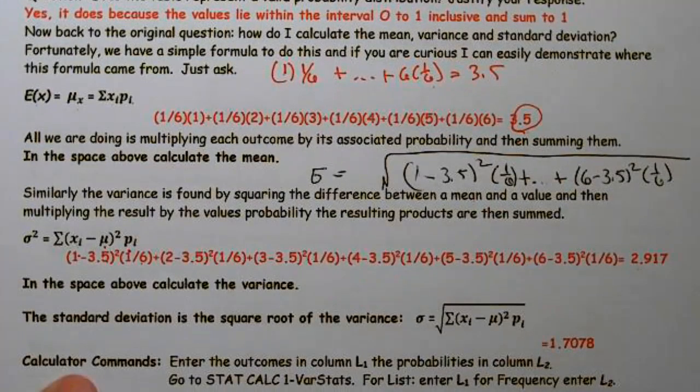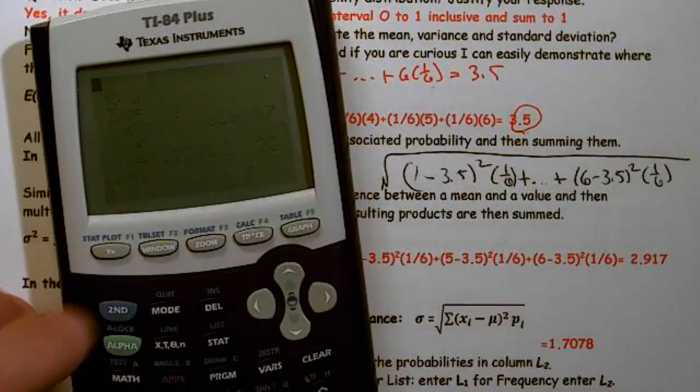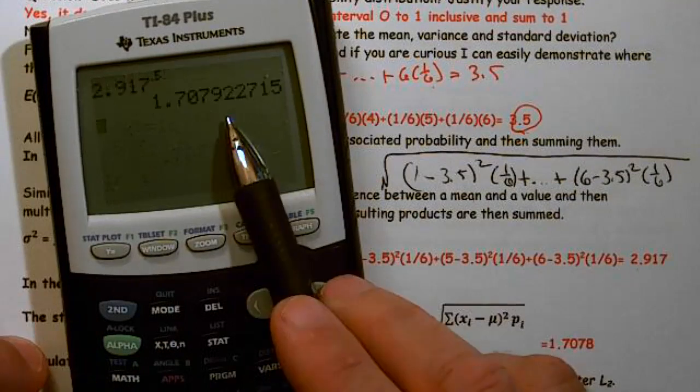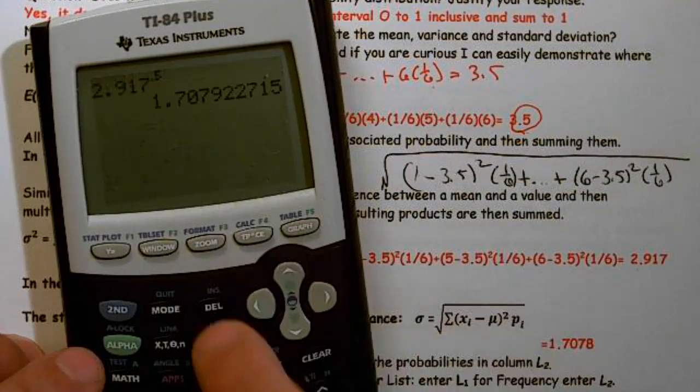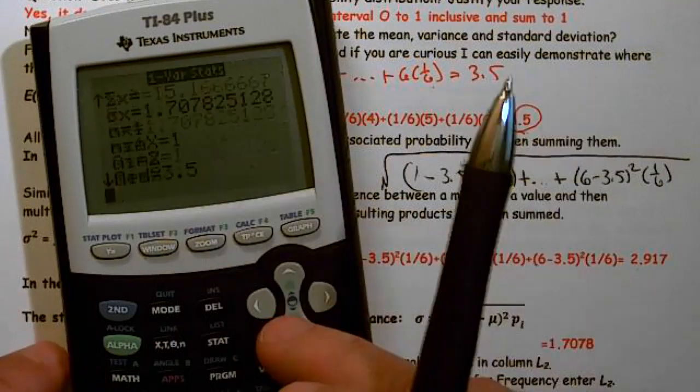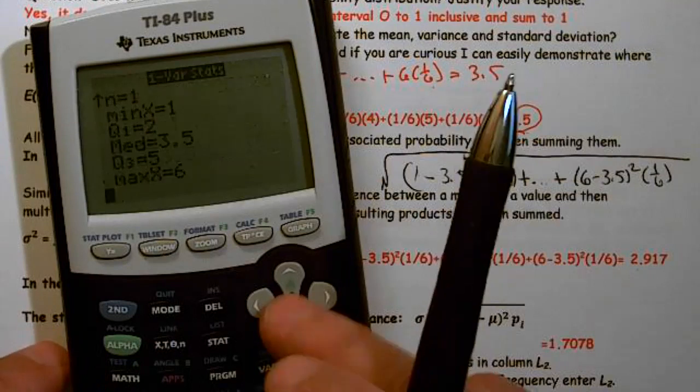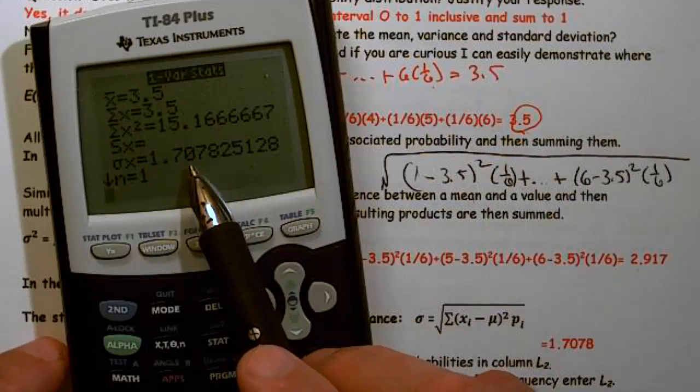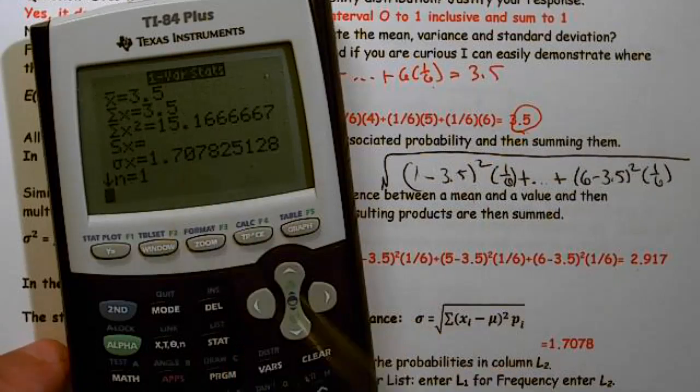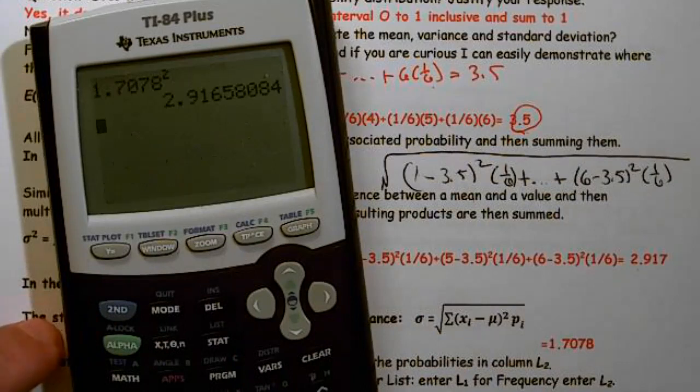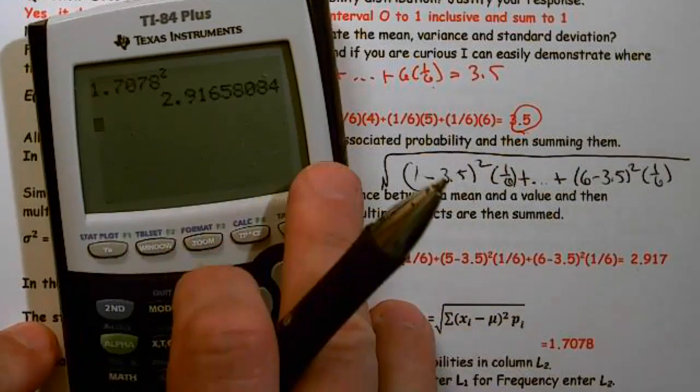And that would be adequate work shown. And if I take 2.917, take the square root of it, I get about 1.7078. One thing real quickly I want to show you is please note that variance is not shown on this. So if they ask you for the variance, you're going to have to take this value and square it. So if I take 1.7078 and raise it to the second power, I get my 2.916.